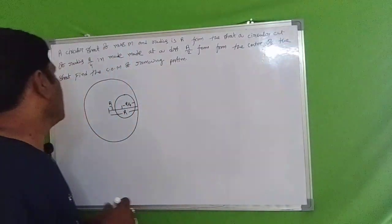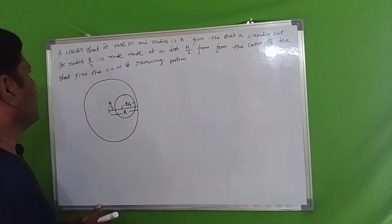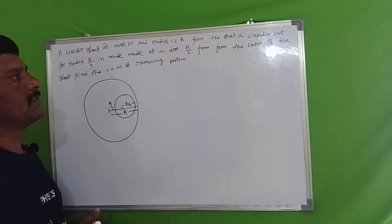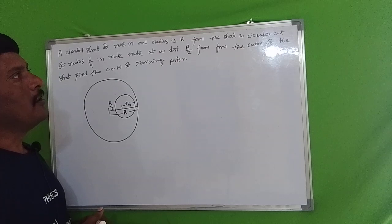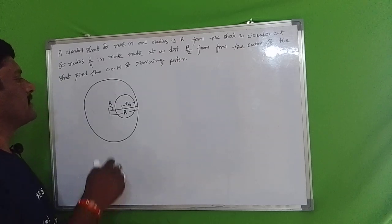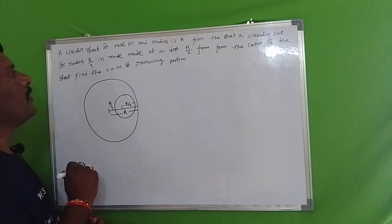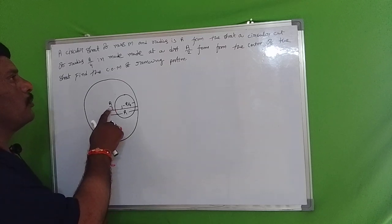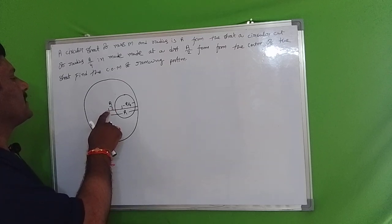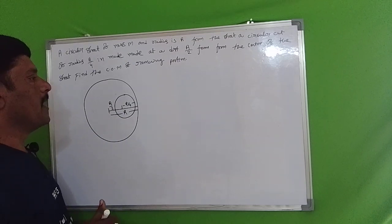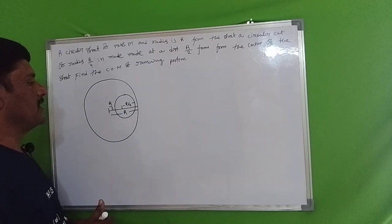Our question is: a circular disc of mass M and radius R. From the disc, a circular cut of radius R/4 is made at a distance R/2 from the center of the disc. Find the center of mass of the remaining portion.